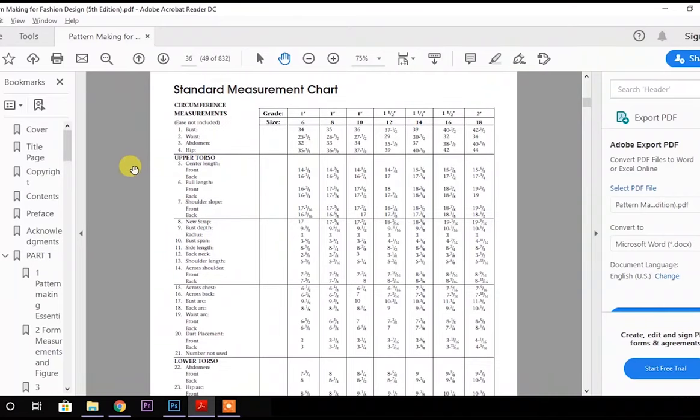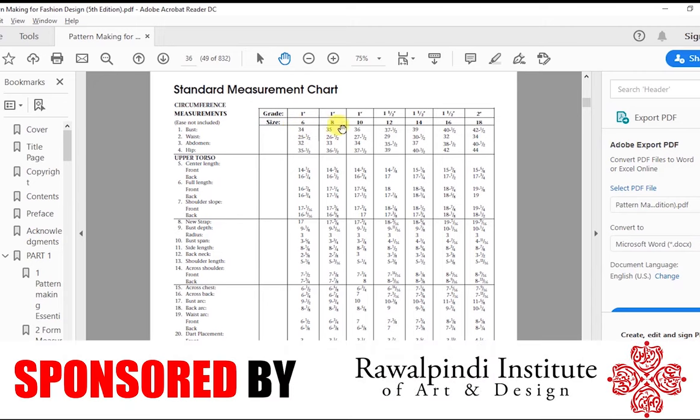Assalamu alaikum. Today we will be discussing the Standard Measurement Chart. This chapter you will be able to see in chapter number 2, on the last page. Now we have to discuss about this page and explain it briefly. If you see over here, you have a chart with a look at size and many details like size 6, size 8, 10, 12, 14 and so on.